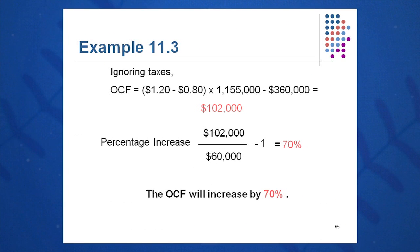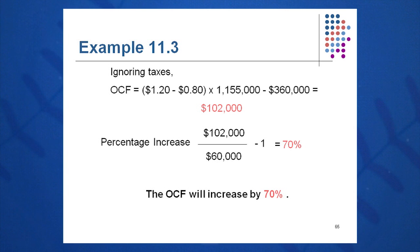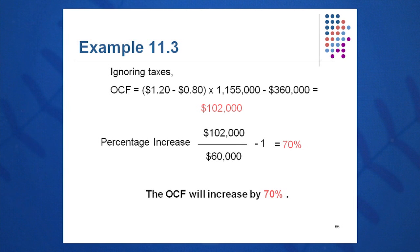Now what does that mean? This is a heavily capital-intensive company. If our sales go up 10%, we are levered up by our high fixed costs by a factor of seven. So our degree of operating leverage will leverage up our small increase in sales to a large increase in OCF of 70%. A 10% increase in sales is levered up in OCF by our degree of operating leverage to a positive 70% change in OCF.